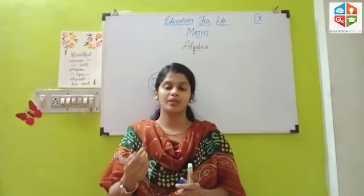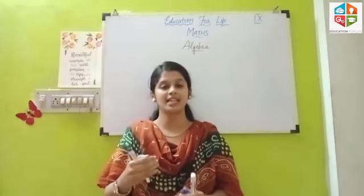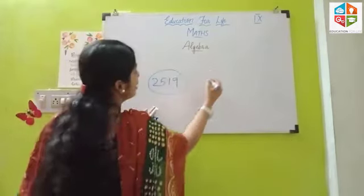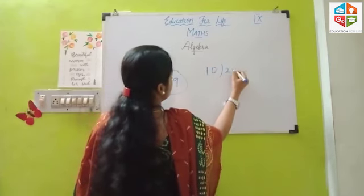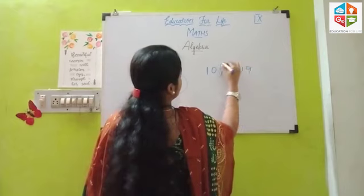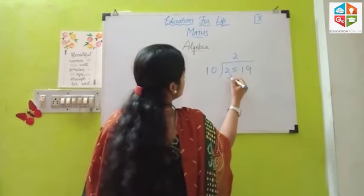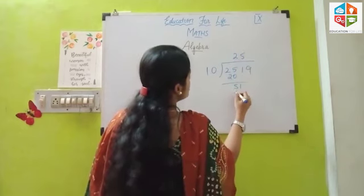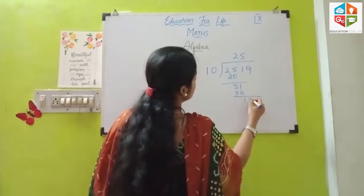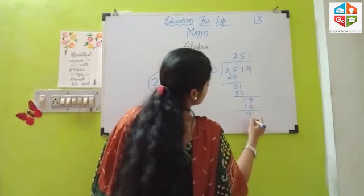The remainder is 9. That means when divided by 9, the remainder is 8. When it is divided by 10, so 2519 divided by 10, 10 goes into 20, then 5, then 1. 10 goes into 50. Again 1, 9. 10 goes into 10. The remainder is 9.